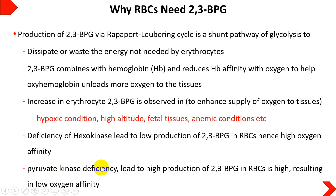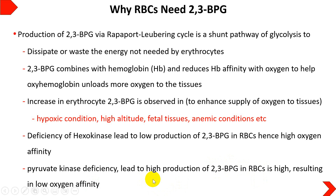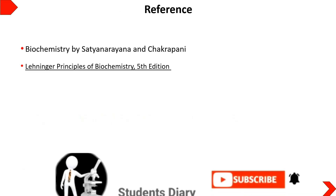Conversely, pyruvate kinase deficiency — pyruvate kinase being the third regulatory enzyme converting phosphoenolpyruvate into pyruvate — leads to high production of 2,3-BPG, resulting in low oxygen affinity, so unloading of oxygen to tissues is easier. However, it is important to remember that within the physiological range, the fluctuation of 2,3-BPG maintained by the Rapoport-Luebering Cycle is normal. Deficiency of certain enzymes can lead to abnormal results because the body cannot maintain the narrow range of 2,3-BPG levels. That was all about the Rapoport-Luebering Cycle.